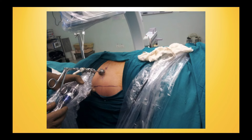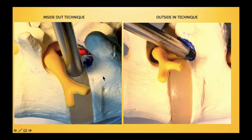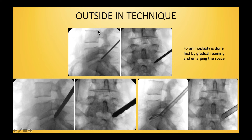This is not a midline approach. The basic steps are reaching the disc, incising the annulus, retrieving fragments, and achieving neural decompression. There are two techniques: inside-out, where you enter the disc first and work outward, and outside-in, where you work in the epidural space without entering the disc, performing a foraminoplasty and using a reamer to widen Kambin's triangle.